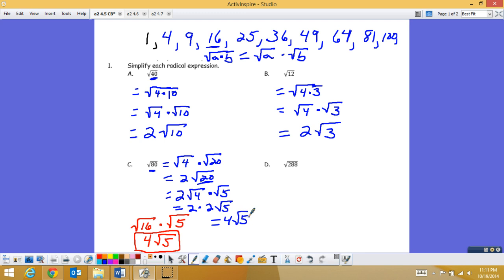So sometimes that's a little tricky and sometimes you need to do that more than once. The largest perfect square that goes into 288 is actually 144. And that's times 2. So that is 12 square root of 2 for that one.